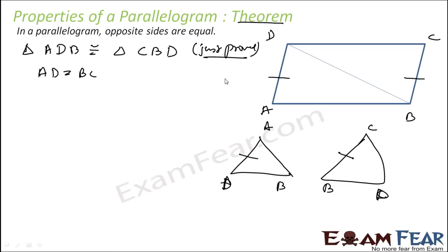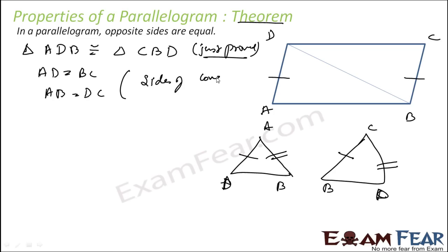AD equals BC, and similarly DC equals AB — these are corresponding sides of congruent triangles. So CD is equal to AB, and thus I have proved that the opposite sides are equal. It's not difficult because we know that the triangles are congruent, which means the corresponding sides are equal.